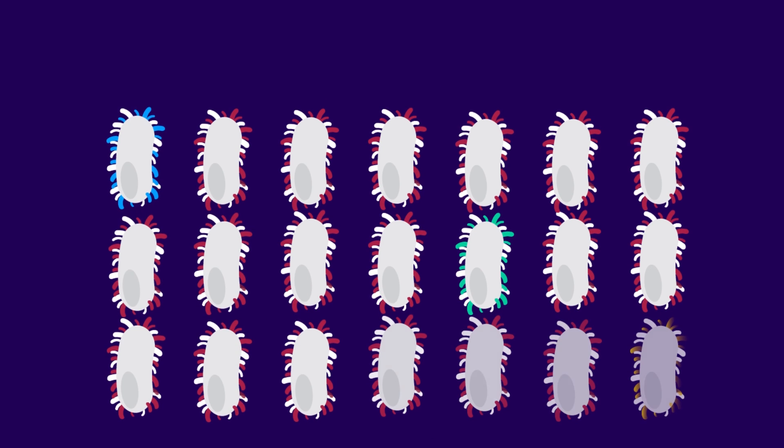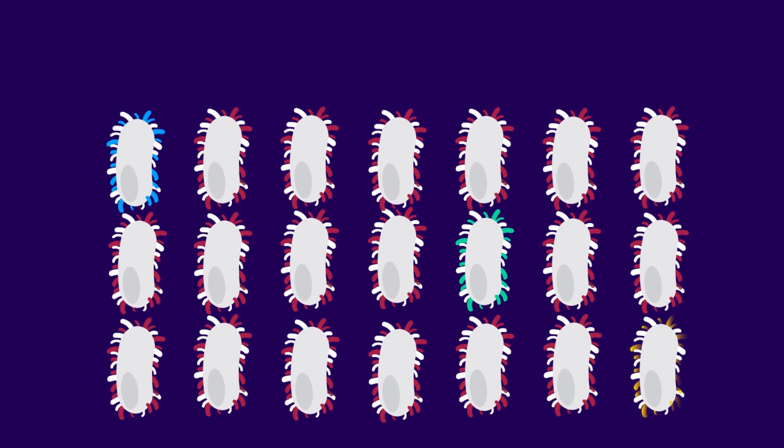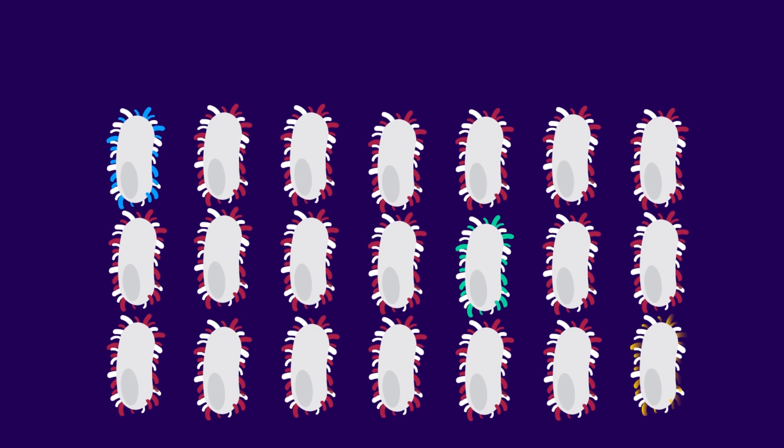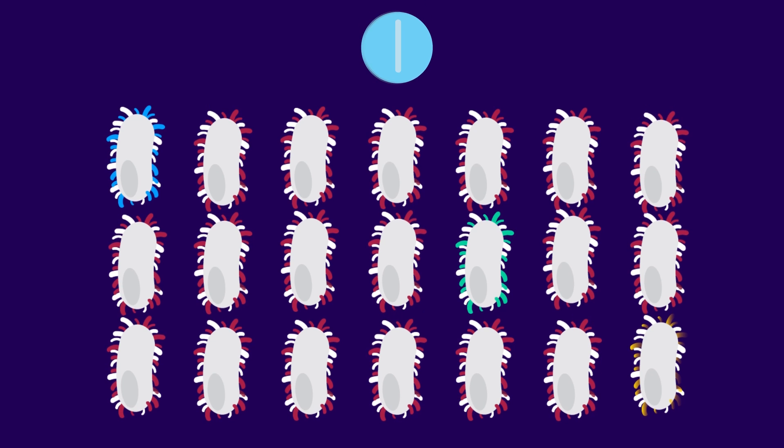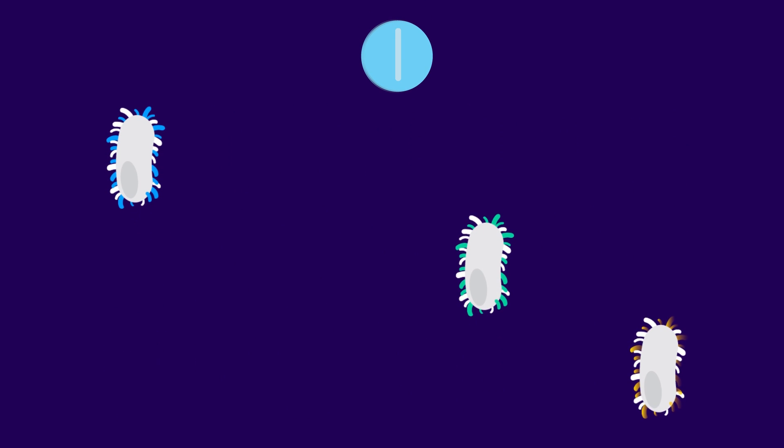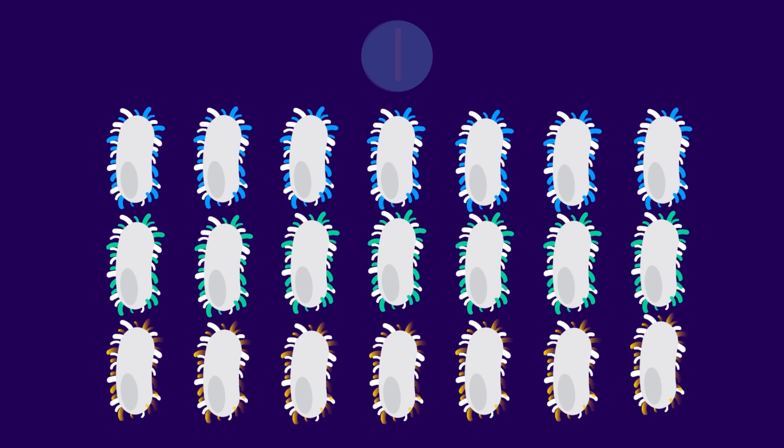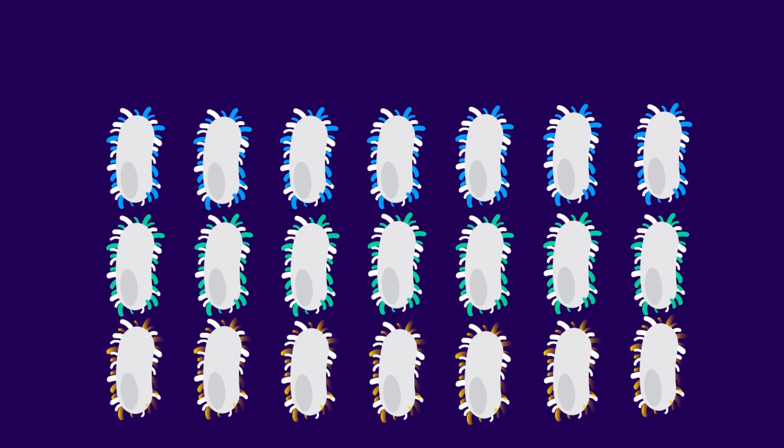Antibiotic resistance is happening through natural selection. In a population of bacteria, due to genetic variation, some of the bacteria have a natural resistance to the antibiotics. These bacteria survive and reproduce and pass on resistance so that the whole colony becomes resistant to antibiotics.